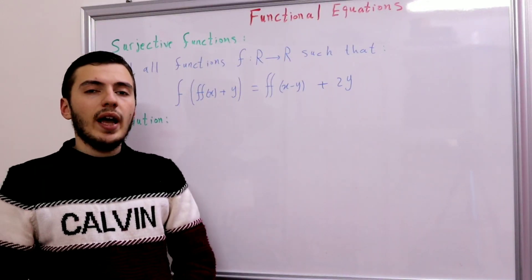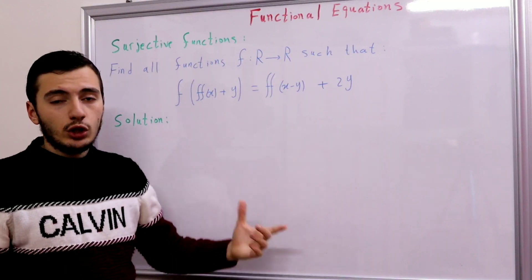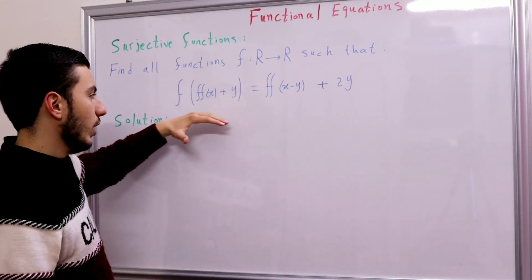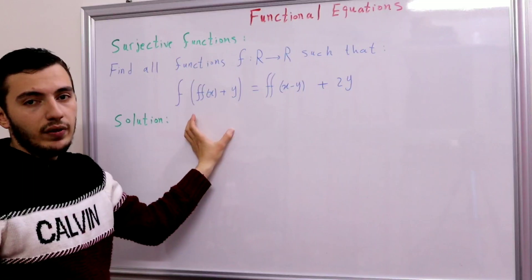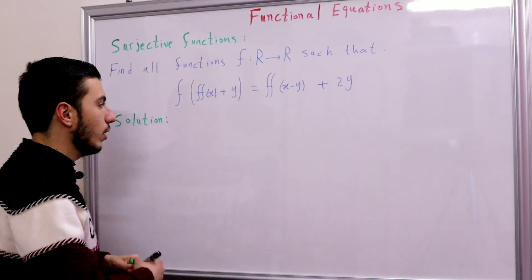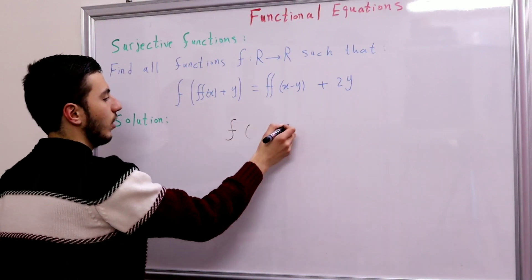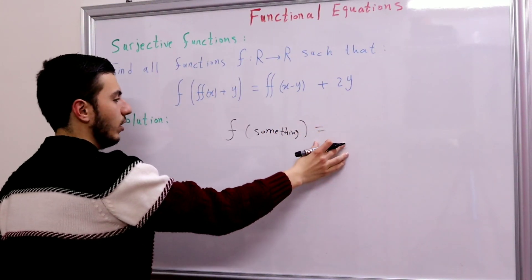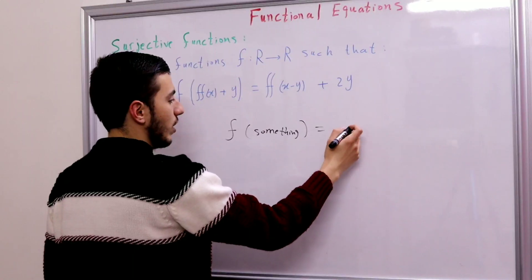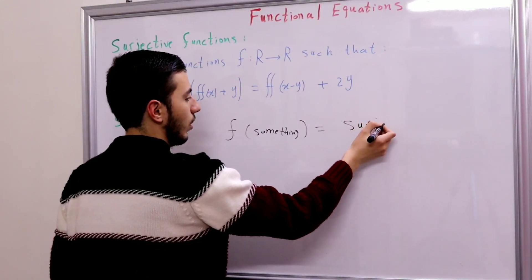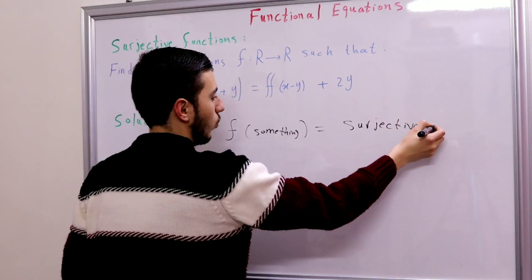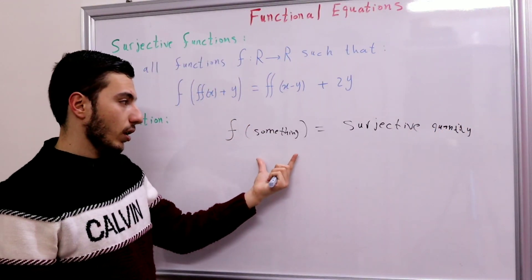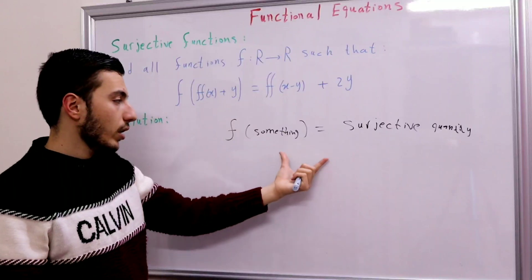First of all, let's talk about how we can prove that a function is subjective. The classical way is simple: you want to make the left-hand side contain one f — that is, f of something. And on the right-hand side you want to have some subjective quantity. If you have f(something) equals some subjective quantity, then clearly f is subjective.